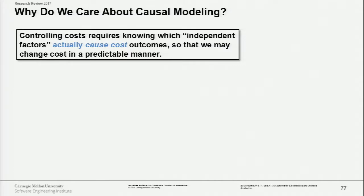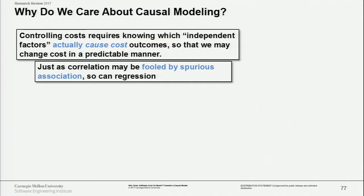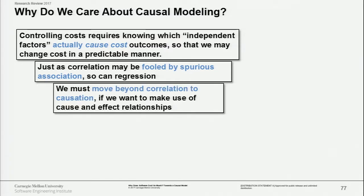So why do we care about causal modeling? The takeaway is that correlation isn't enough. You want to learn what the cause-and-effect relationships are. Things like machine learning and deep learning get you to correlations, and correlations are good for predictions, but they do not predict what happens when you make a change to the situation. That's what causal models buy you.